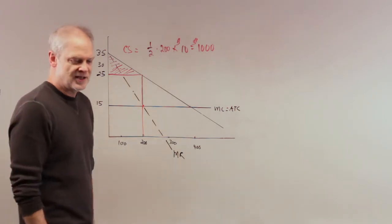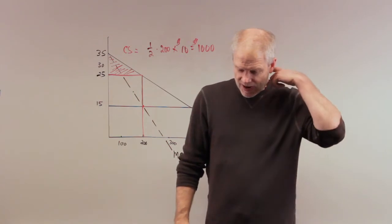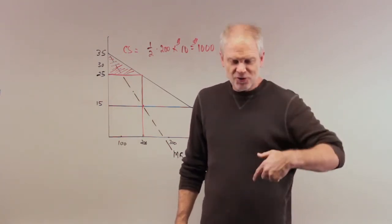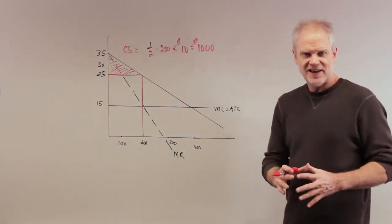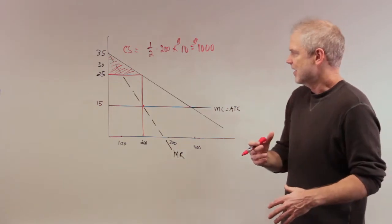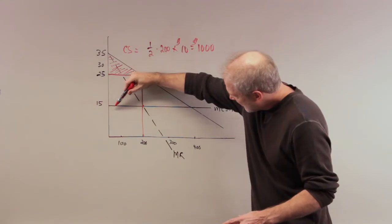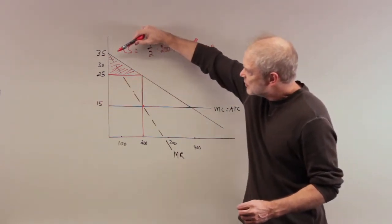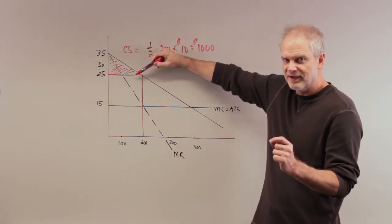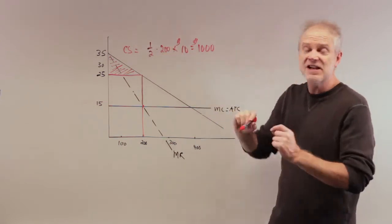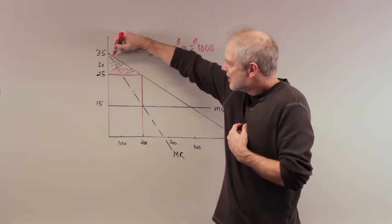Next question: if the monopoly perfectly price discriminates, the consumer surplus amounts to what? What do we mean by perfectly discriminate? Here's the demand curve. The monopolist is going to find every person on this demand curve and charge them their willingness to pay. Therefore, there's going to be zero consumer surplus.